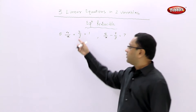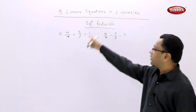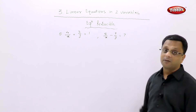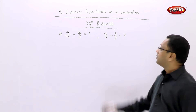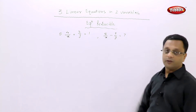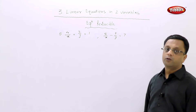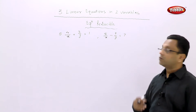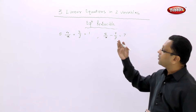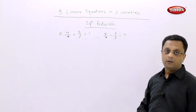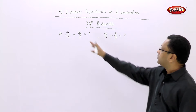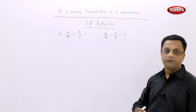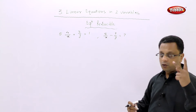If you cross multiply, then you get 4x plus 3y upon xy. When the xy term is there, it is not a linear equation. So what we have to do? We have to first reduce it to the standard form of the linear equation — a pair of linear equations in two variables.